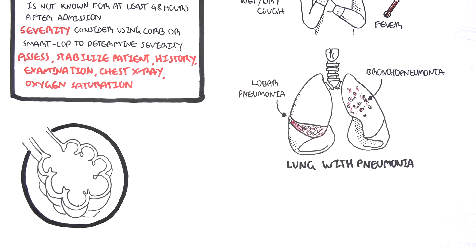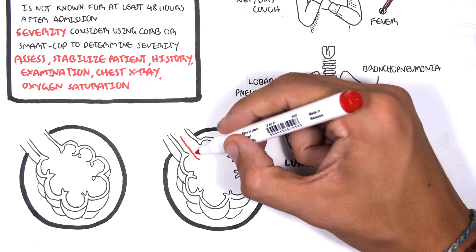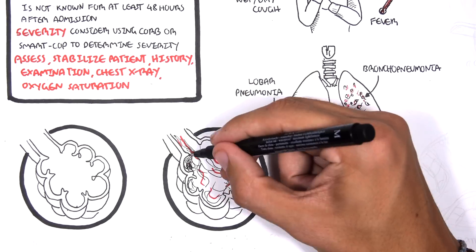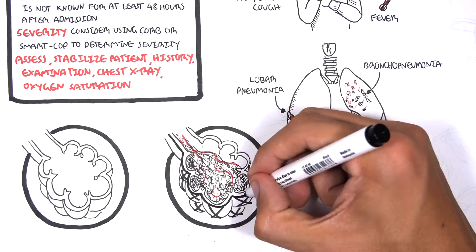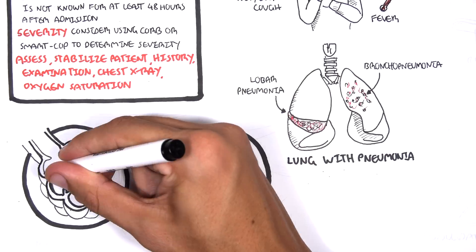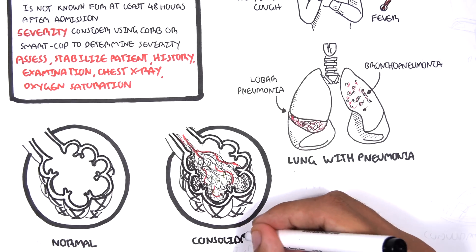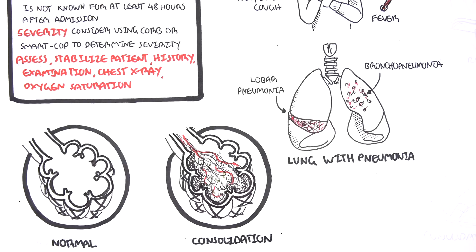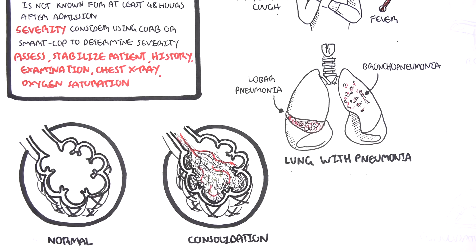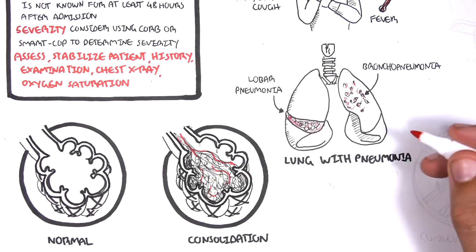Let's look at the functional units of the lungs, which are the alveoli. Normally alveoli are clear and allow for exchange of oxygen with carbon dioxide. In lobar pneumonia, these alveoli are filled with fluid made up of bacteria, pus, blood, or fluid. This fluid substance within the alveoli is called consolidation, and it's due to the inflammatory process that occurs within the lungs.